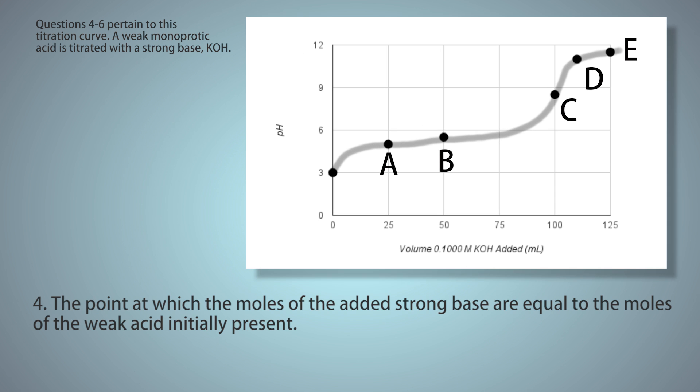Question 4: The point at which the moles of the added strong base are equal to the moles of the weak acid initially present. That is C. That's what we were just talking about. You can see where the concavity of the graph changes. This is the equivalence point. And you can see on the graph it corresponds with about 100 milliliters of this 0.1000 molar KOH added.